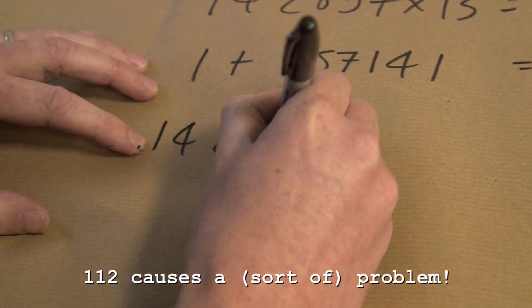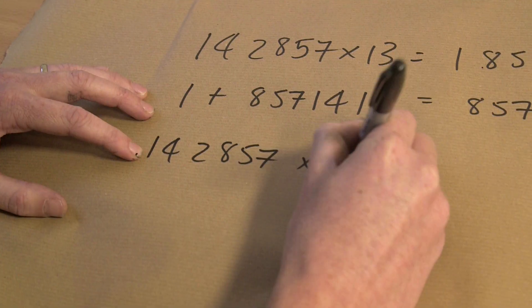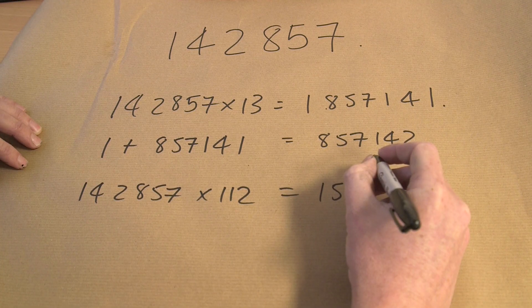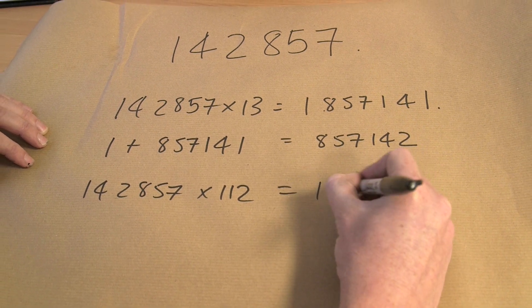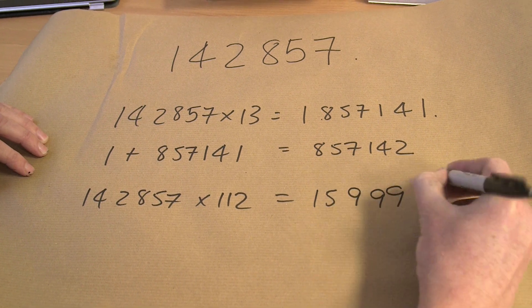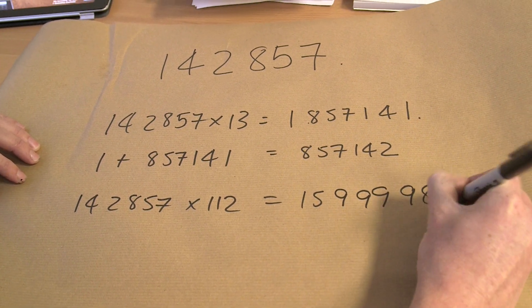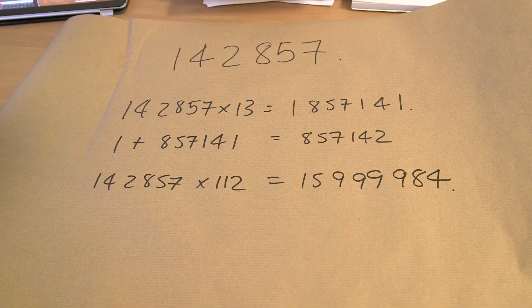So, one, four, two, eight, five, seven times a hundred and twelve equals. Right, let's do it. Okay, I noticed something about a hundred and twelve. You're a pain for choosing a hundred and twelve, but we see something else. A hundred and twelve, I think, must be a multiple of seven. In fact, it is. Right?